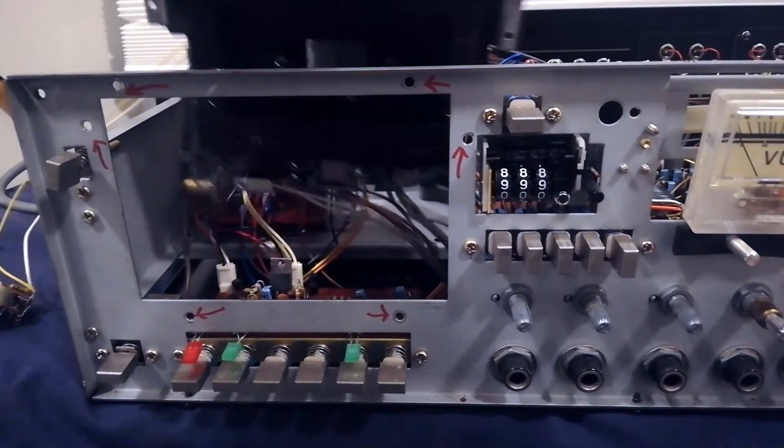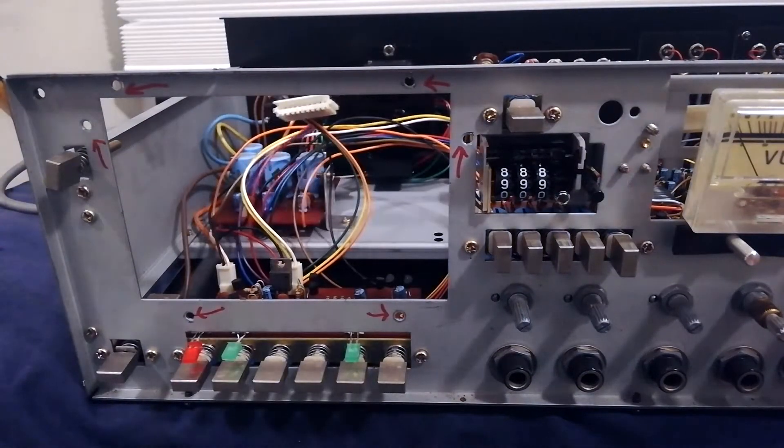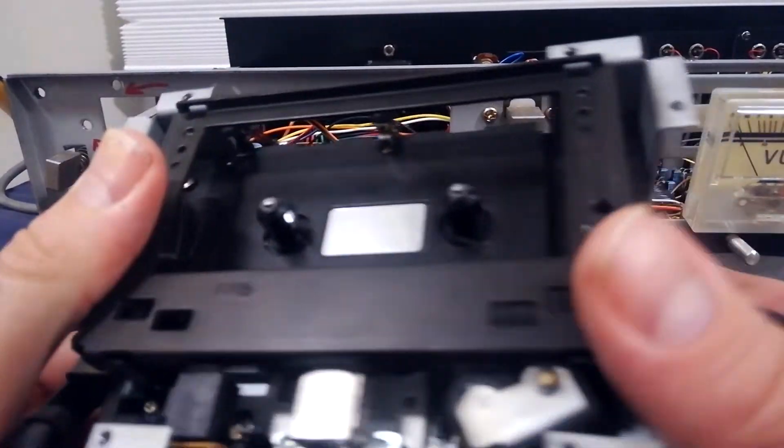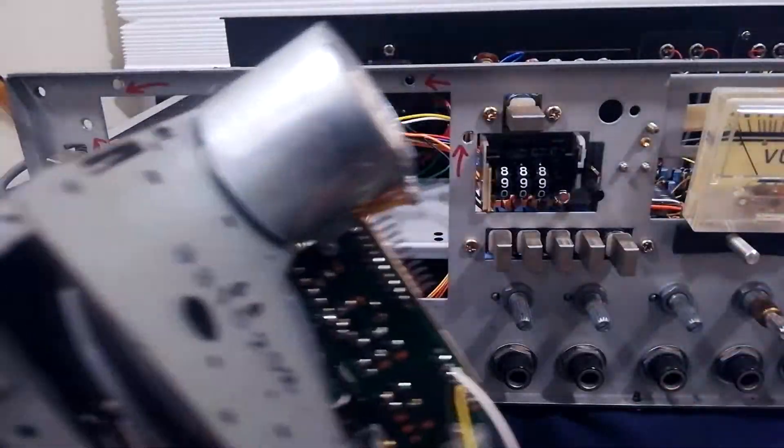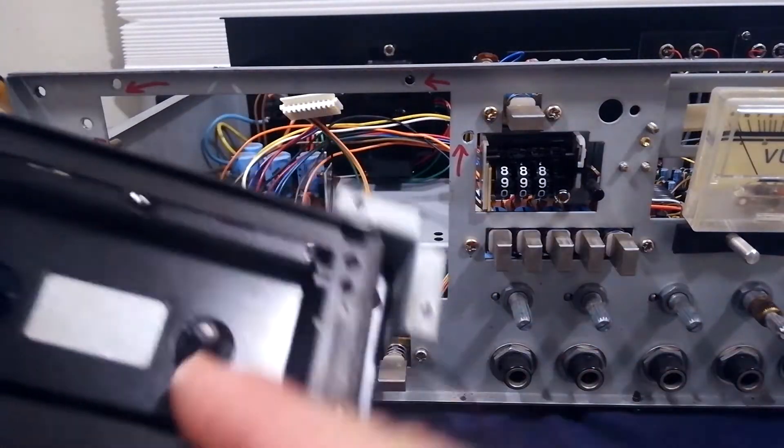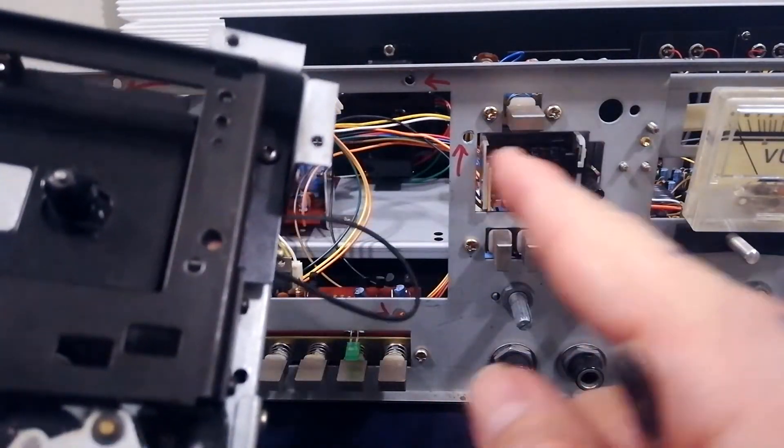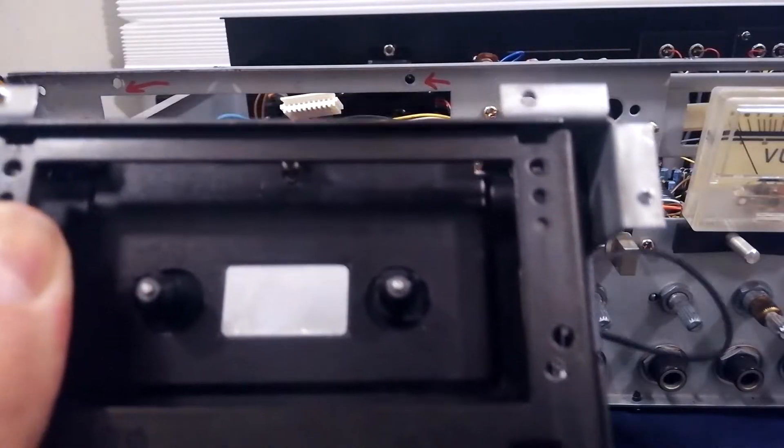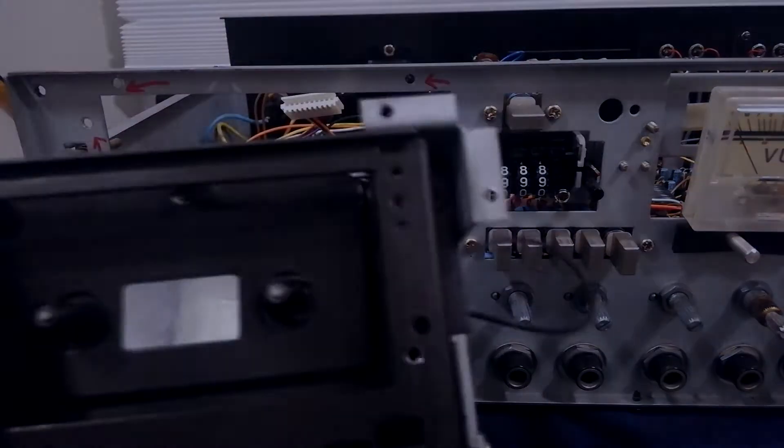Okay with those screws removed, that's just going to lift out. You can see that's the belt that's coming from this reel going off to the counter there. Let's get the camera set up again and we'll have a look at this transport.